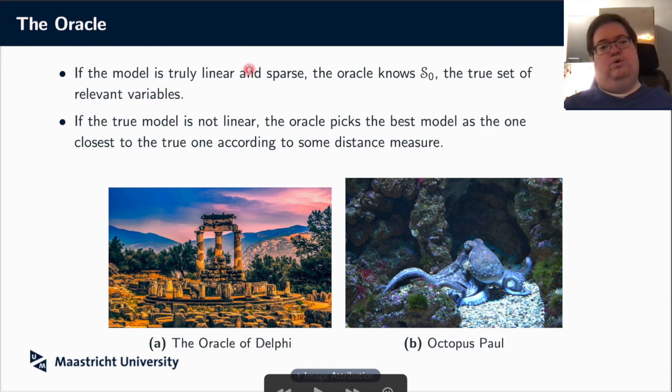So what these have in common is that they somehow magically seem to know the truth. So that is also what the oracle for us does. If in fact our model is really linear and really sparse, so beta has many zero elements, then the oracle knows what we call S_0, the true set of relevant variables. So it knows which of these variables actually have beta coefficients which are non-zero.